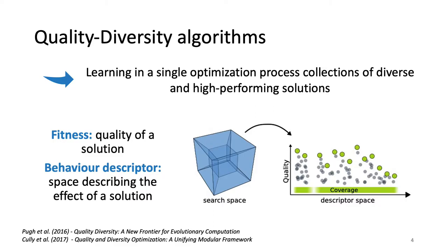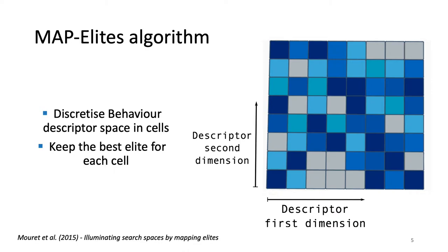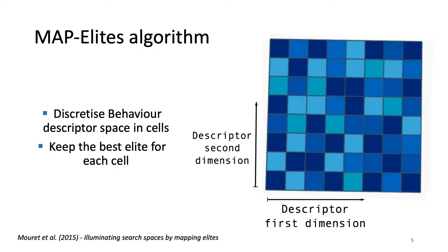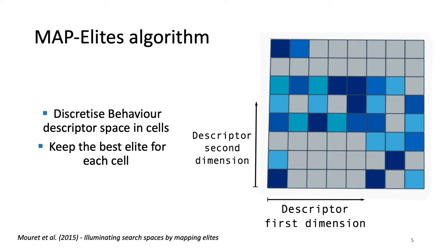The most well-known of these algorithms is MapElites, which is based on the idea of discretizing the behavior descriptor space — you have an example here in two dimensions — and keeping in each cell the best possible individual, called an elite.